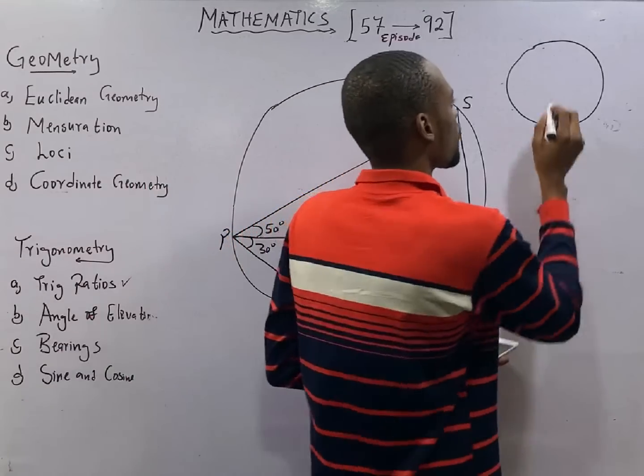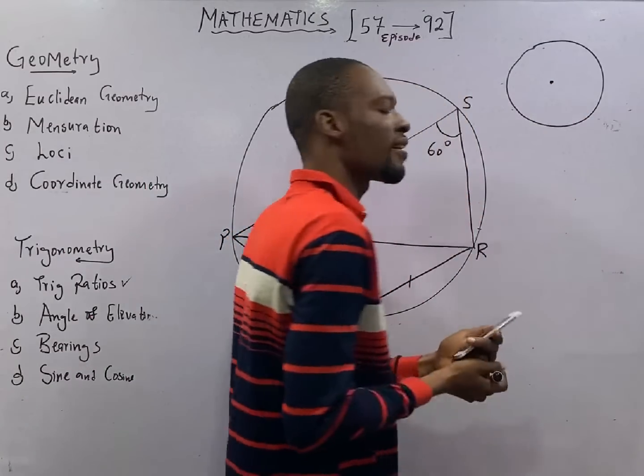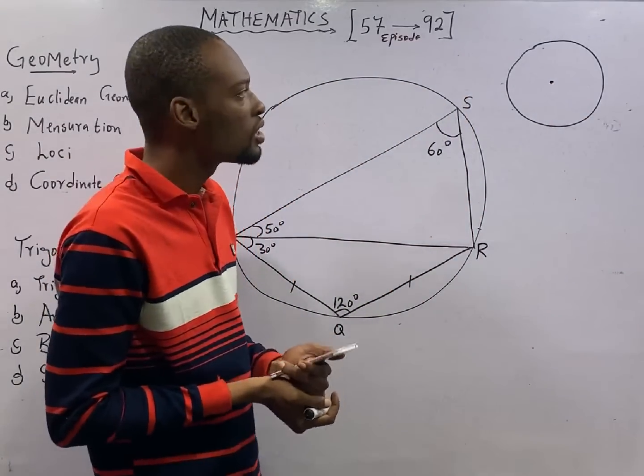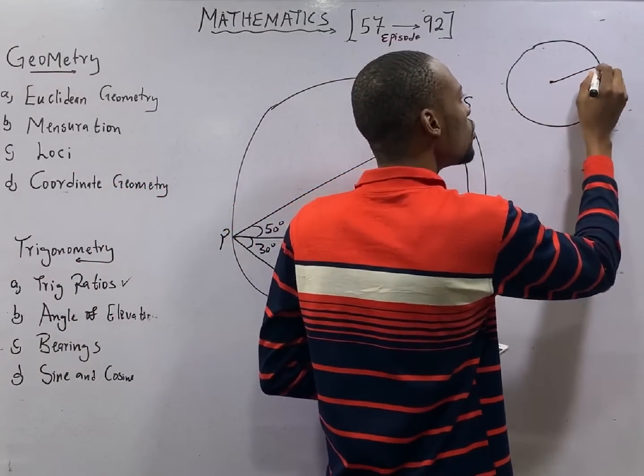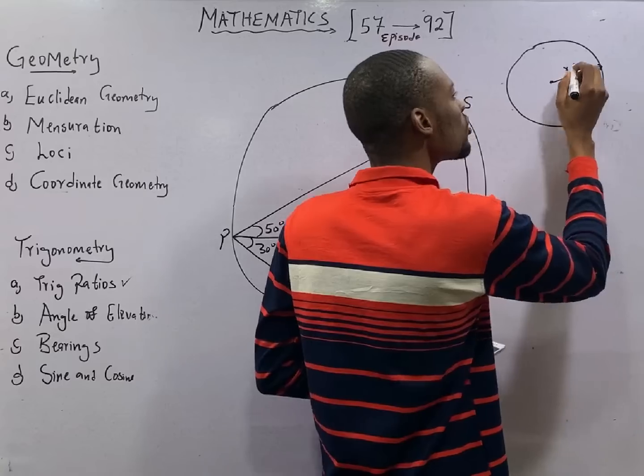Now, here is the center of the circle. If you draw a line from the center to any part of the circle, that line is referred to as radius.